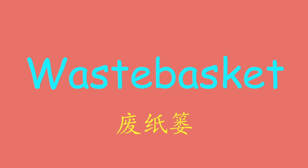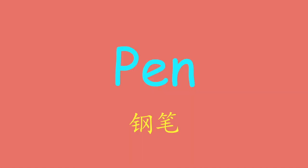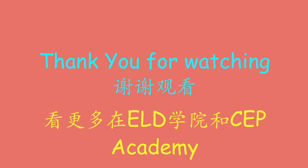下一个 Waste Basket. 这个单词看起来很难但是很简单，只要记住 Waste 还有 Basket，两个组起来就是 Waste Basket. 跟我一起 Waste Basket. 这是什么？这是一个 Waste Basket. 下一个 Pen. 跟我一起读 Pen. 这是什么？这是一只 Pen. 感谢观看，看更多视频在 ELD 学院和 CEP Academy，谢谢再见。